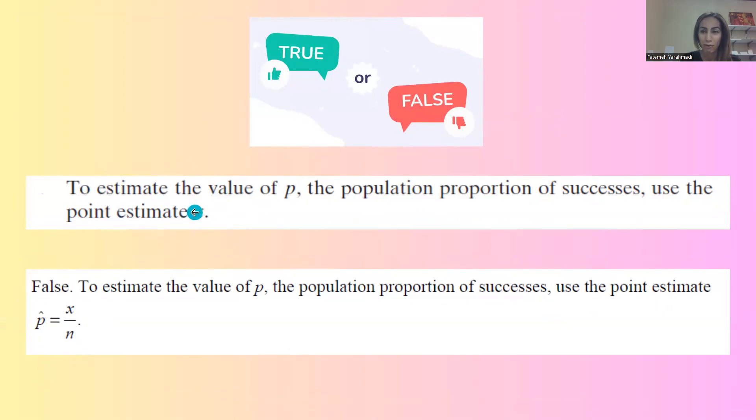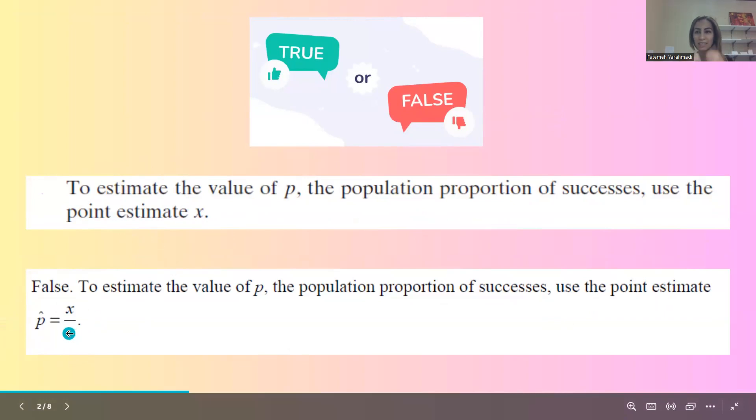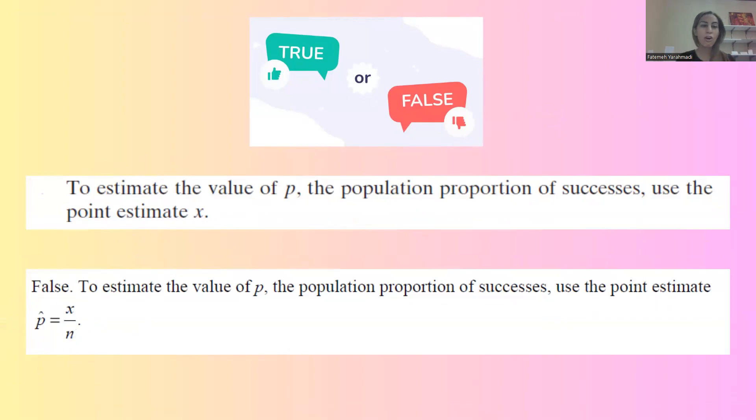This is false because the definition is point estimate P hat equals x divided by n. It is not just x. We take the number of successes in the sample and divide it by the sample size.